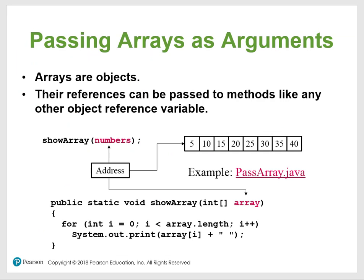The next part is passing an array as an argument to a method. You're writing public static void showArray — that's the name of the method — and you're passing across the array. This array happens to be the memory address of the array object. So you can actually pass across the memory address of the whole array.